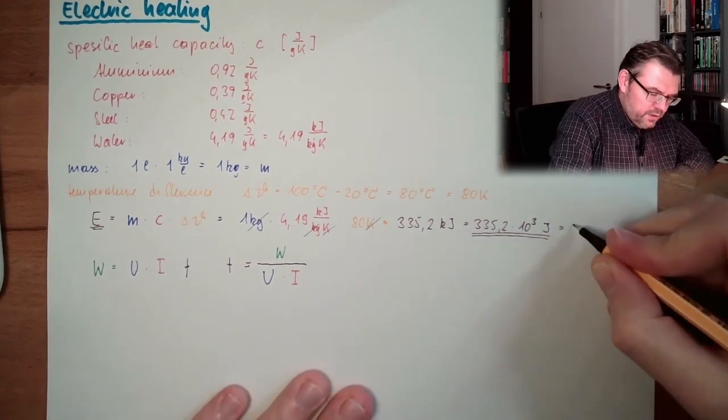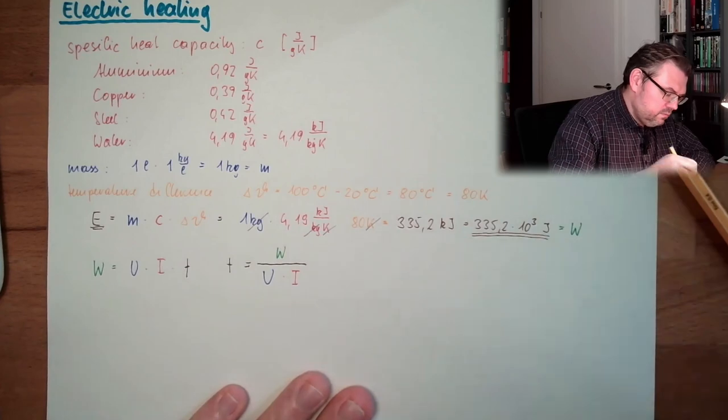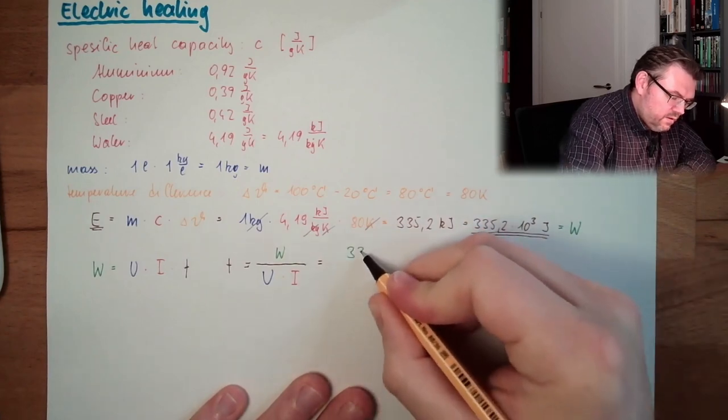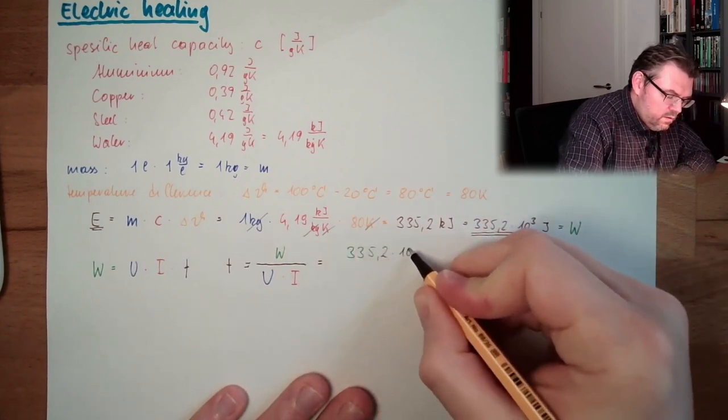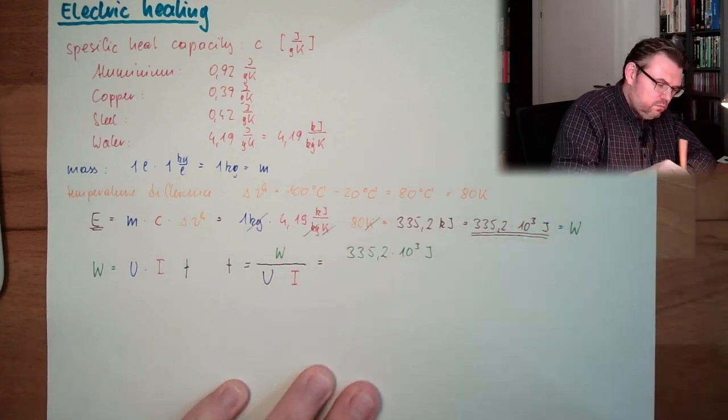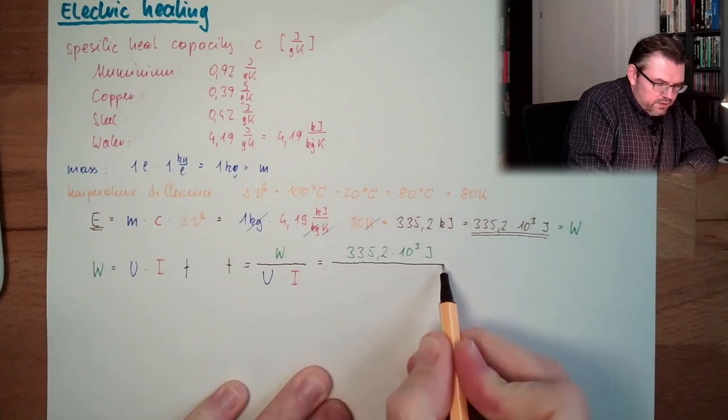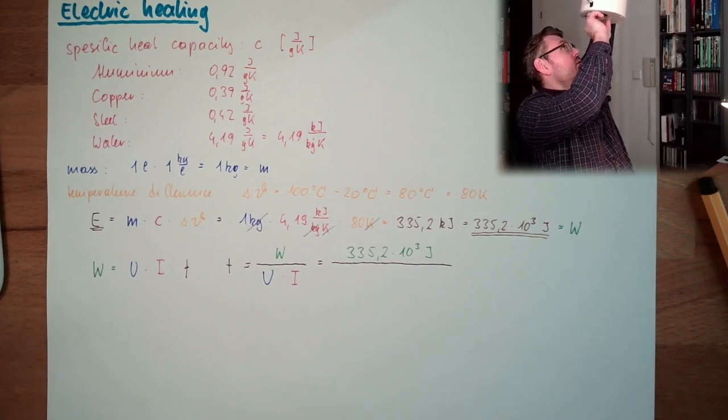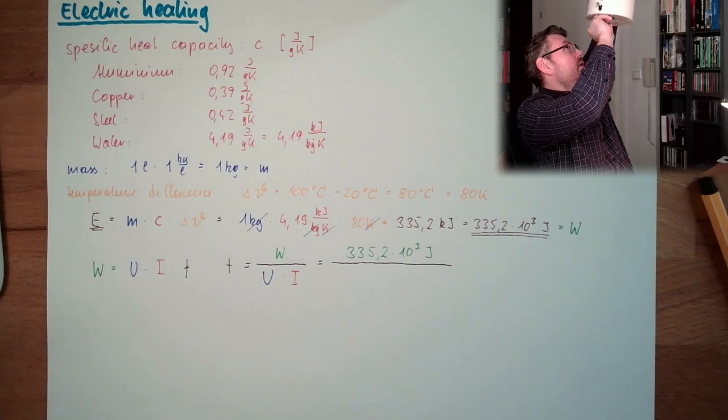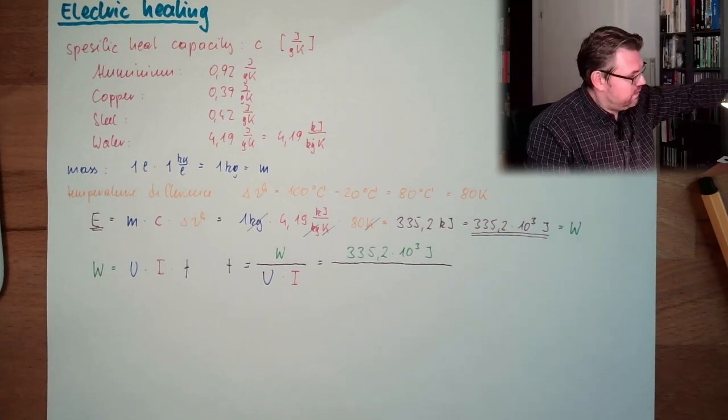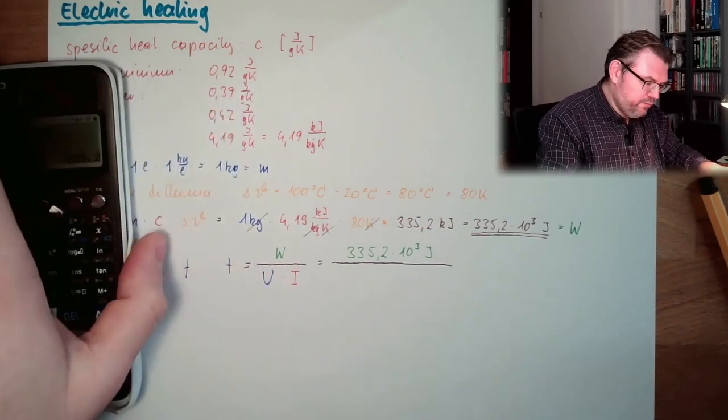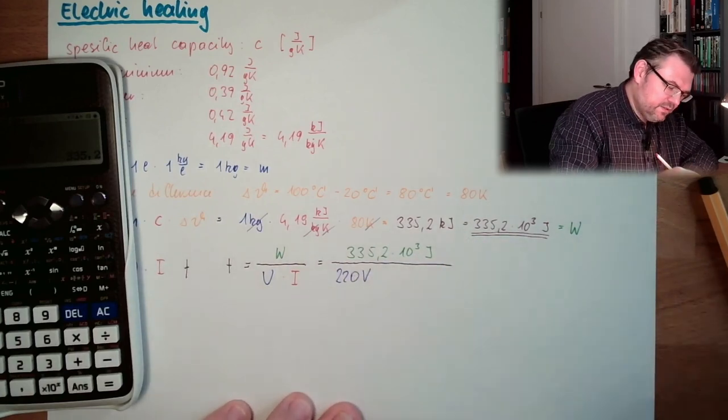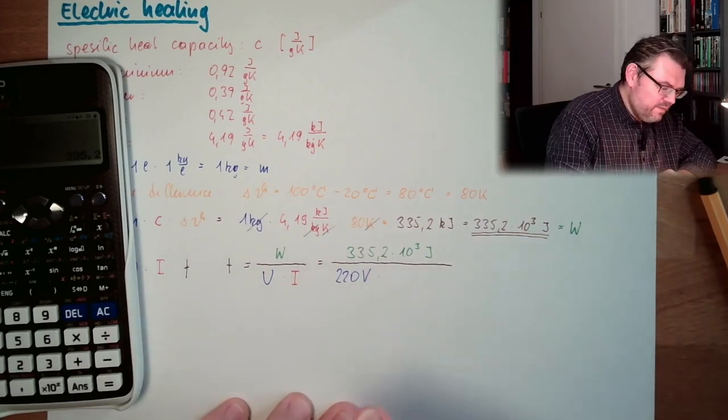I need those values. So, the work, this is the work actually we need to put in. This I know. This is 335.2 times 10 to the 3 Joule. And now we need to know the voltage and current. Then I have a look at the type. And there is written 220 volts and 2000 watts.